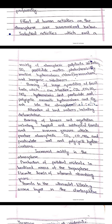Alteration of land surface including deforestation, burning of biomass and vegetation including tropical and subtropical forests and savannagrasses, produces atmospheric carbon dioxide, carbon monoxide, nitrogen dioxide, particulate soot and polycyclic hydrocarbons. Tropical and subtropical forests are characterized by low variability in annual temperature and high levels of rainfall.